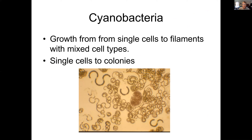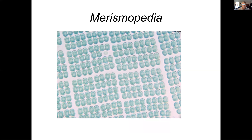The first group is cyanobacteria. They are bacterial so they don't have a nucleus, but they're some of the most advanced bacteria — morphologically variable. They can go from single cells that look just like bacteria to mixed cell types, single cells to colonies. This is an example of one arranged in regular sheets: Merismopedia.